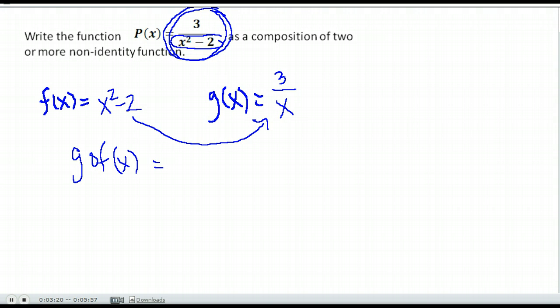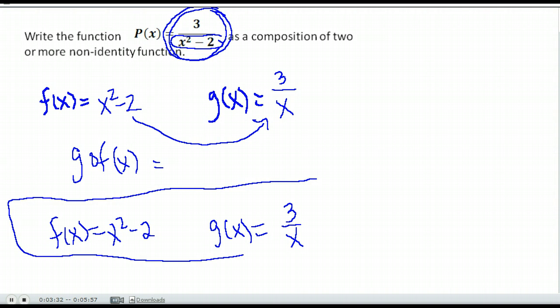So g of f of x is what we found with our f of x being x squared minus 2 and our g of x being 3 over x. If we put those together as g of f of x, we would get that quantity p.